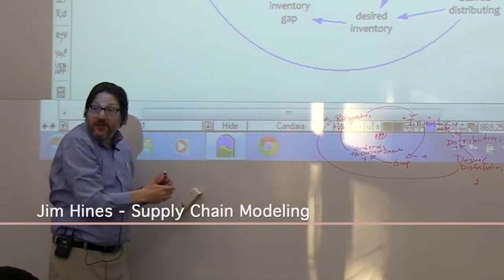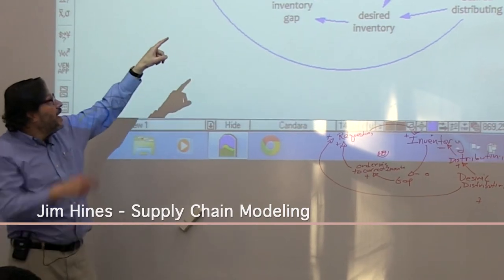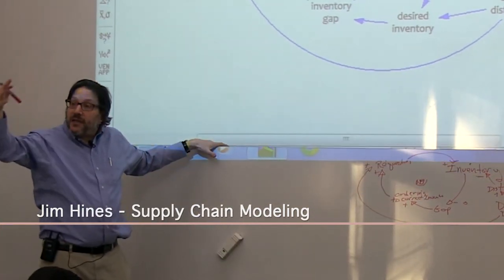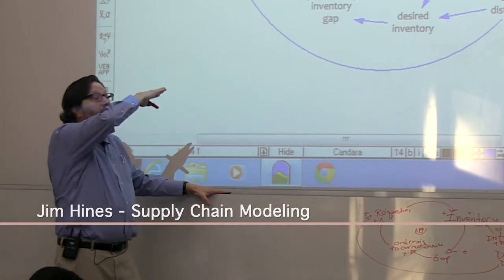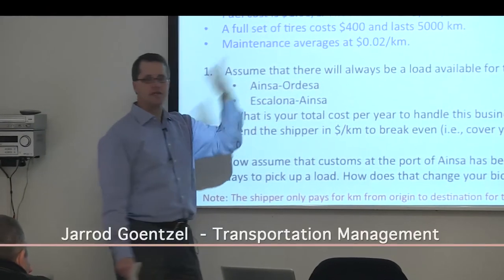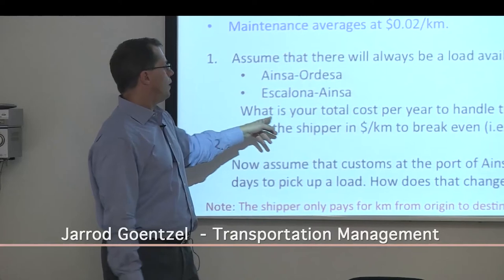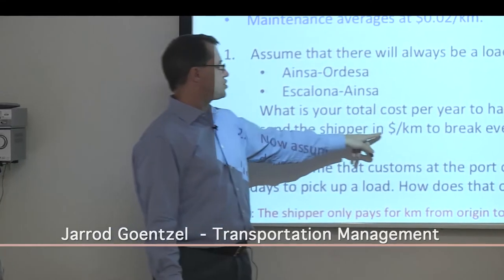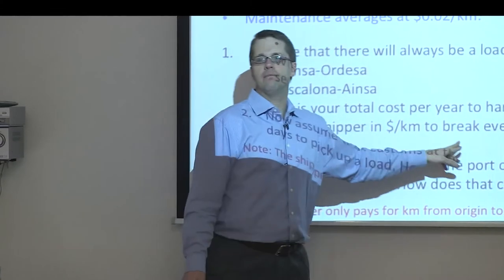All models have purposes, and the purpose of this model is really to understand how, given a continuing need to distribute, inventory is going to behave. To handle these shipments — you can always load up in these cities and take another load — but what would it cost for you to do this business, and then what bid should you send to the shipper in terms of dollars per kilometer in order to break even?